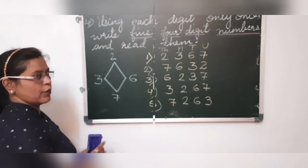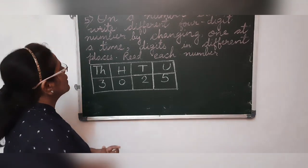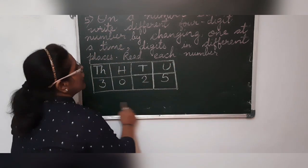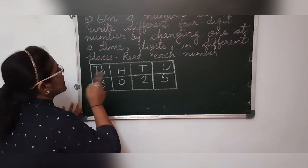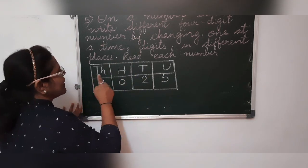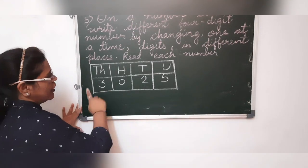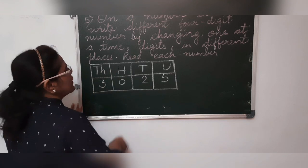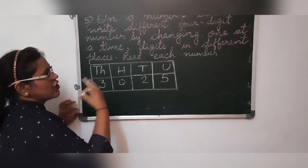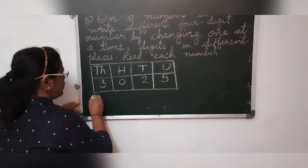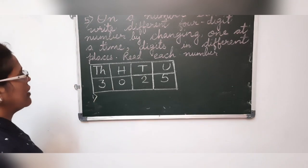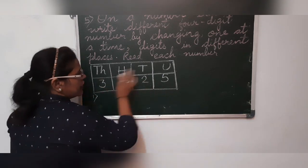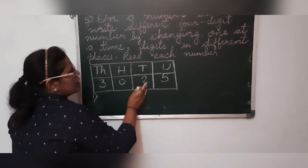Now we will start with the fifth sum. This is the last sum of your exercise on page number 9. The sum says that on a number slate, this is the number slate given to you, write different four digit numbers by changing one at a time. One you can change at a time. And write them in different places. One at a time in different places and read them. Changing the numbers in different places and you have to make the number. So we will change one number at a time and we will write the numbers and read the numbers. Now in place of thousands, 3 is there. First we will read this number as 3,025.